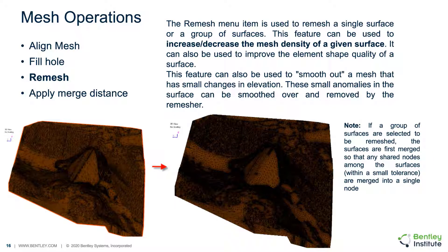The Remesh function initiates a remesh of a surface mesh with the intent of improving the quality of the surface mesh. If surface mesh quality is improved, it will ultimately improve the subsequent quality of the volume mesh generated for the finite element application. It is worth noting that this functionality can also be used to smooth out small changes in elevation in a mesh that are not significant to the problem, as these small anomalies can be smoothed over and removed by the remeshing algorithm.